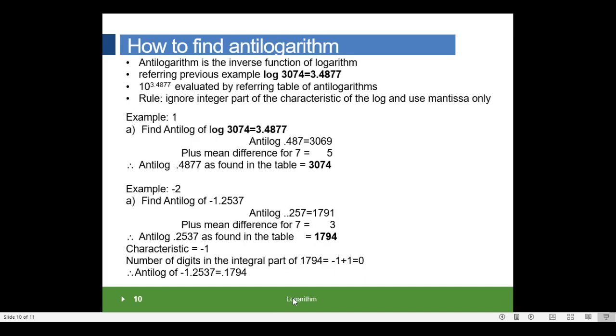Now, let us see how to find the antilogarithm of log values. Antilogarithm is the inverse function of logarithm. By referring to the previous example, say log 3074 is equal to 3.4877. 10 raised to 3.4877 is evaluated by referring to the tables of antilogarithms. The rule applied for antilogarithm is: ignore the integral part of the characteristic of the log and use mantissa part only.